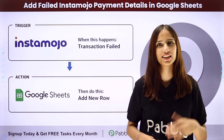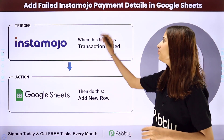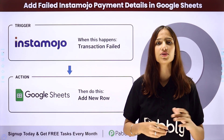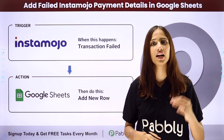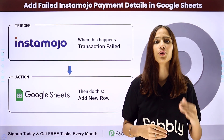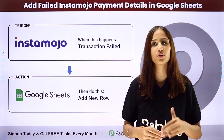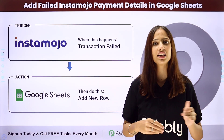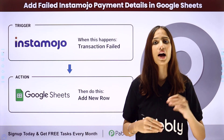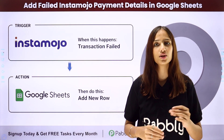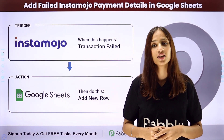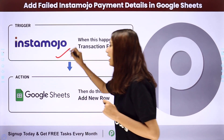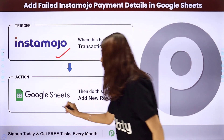Hello everyone, welcome back to Pabbly Connect. In today's video we will learn how to add failed InstaMojo payment details in Google Sheets. Suppose you are using InstaMojo to collect payments online from your customers, and whenever a customer tries to make a payment but the transaction fails due to any reason, you want to add those details in your Google Sheet. For that we will be using Pabbly Connect, where the trigger application will be InstaMojo and the action application will be Google Sheets.